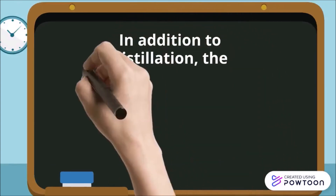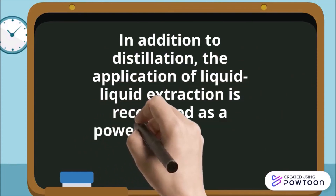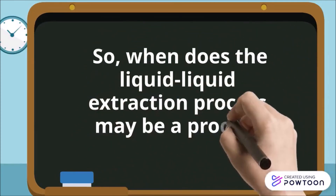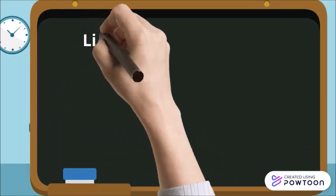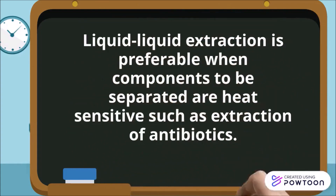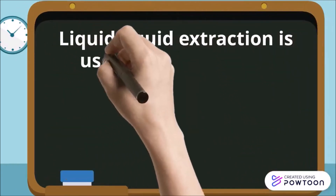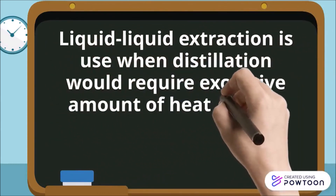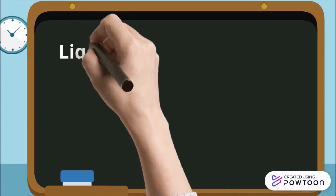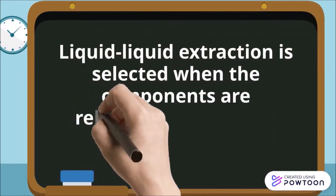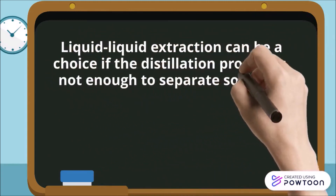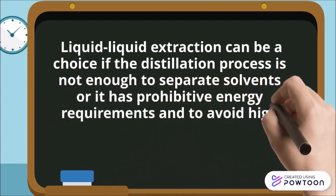In addition to distillation, liquid-liquid extraction is recognized as a powerful separation method in the chemical industry. Liquid-liquid extraction is preferable when components to be separated are heat-sensitive, such as in the extraction of antibiotics. It is also used when distillation would require an excessive amount of energy, such as when the relative volatility falls between 1.0 and 1.2. It is also selected when the components are relatively non-volatile, such as mineral salts, or when distillation has prohibitive energy requirements.